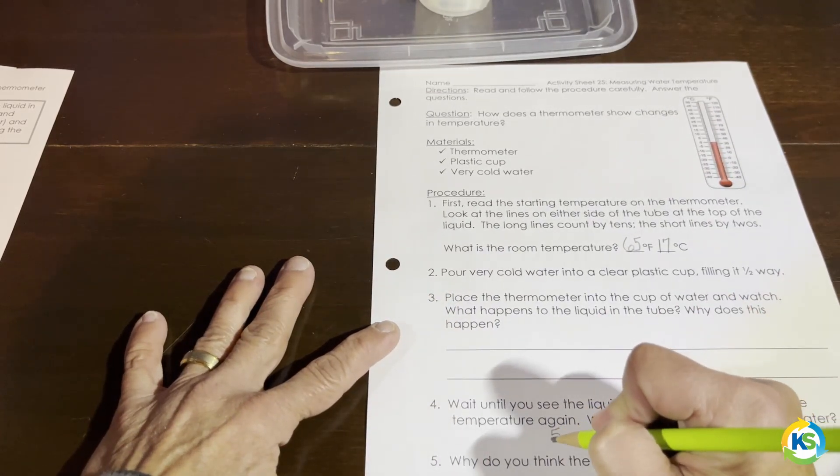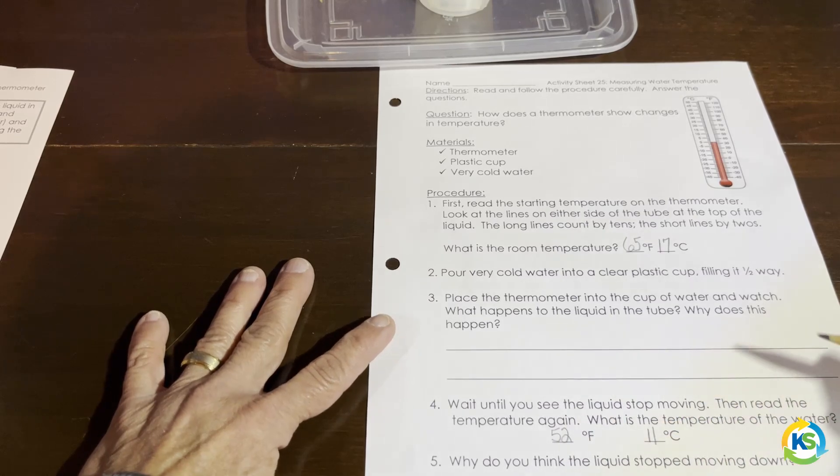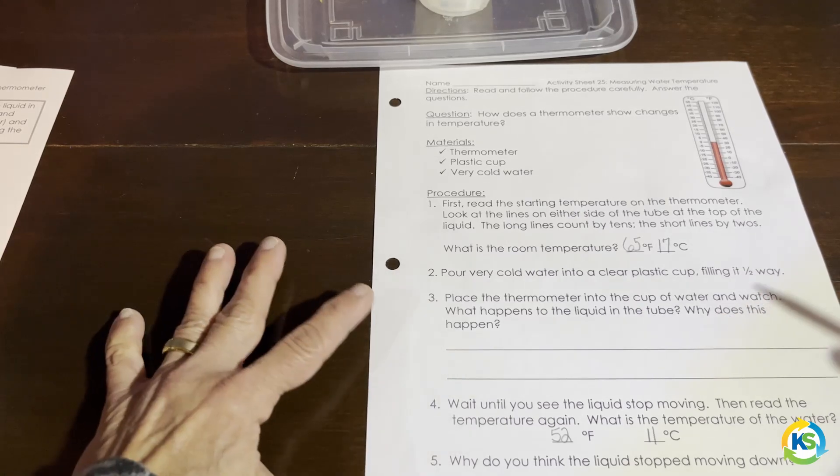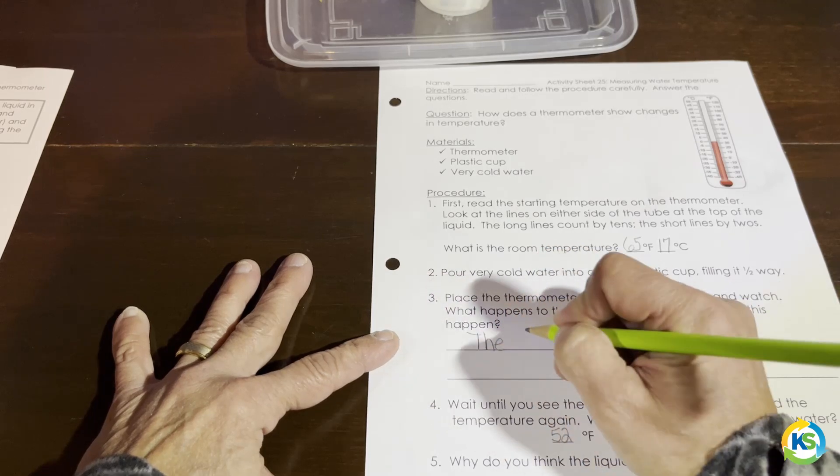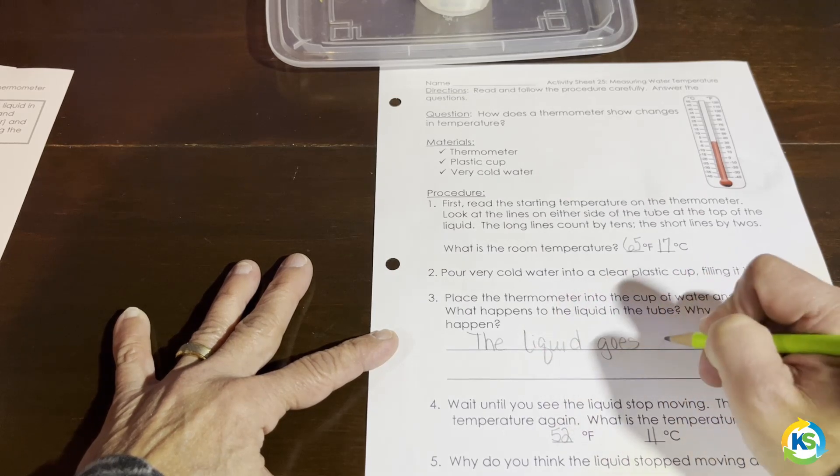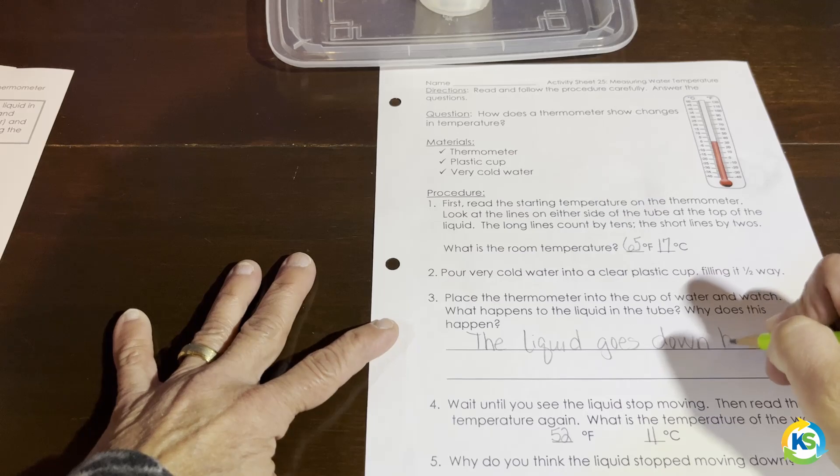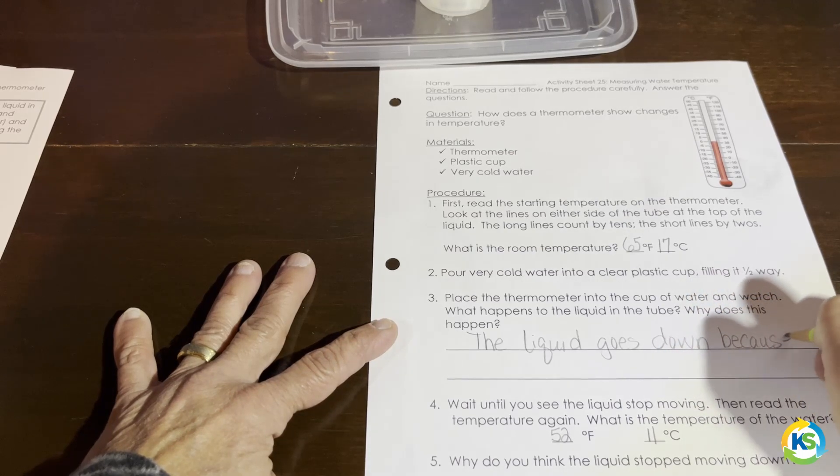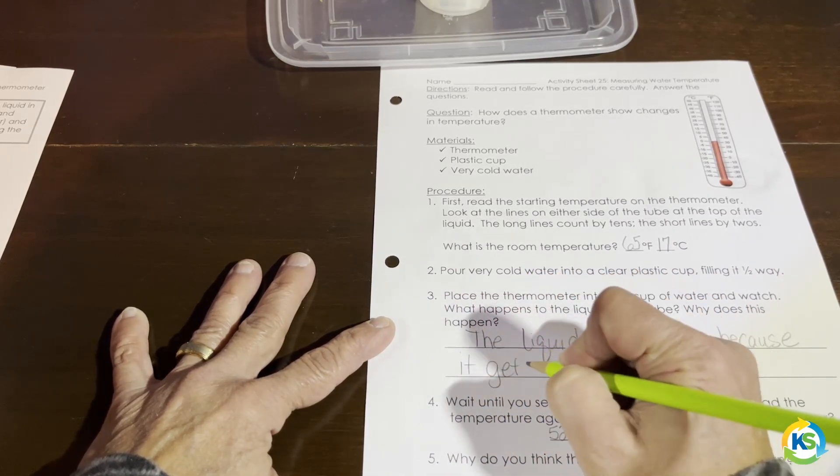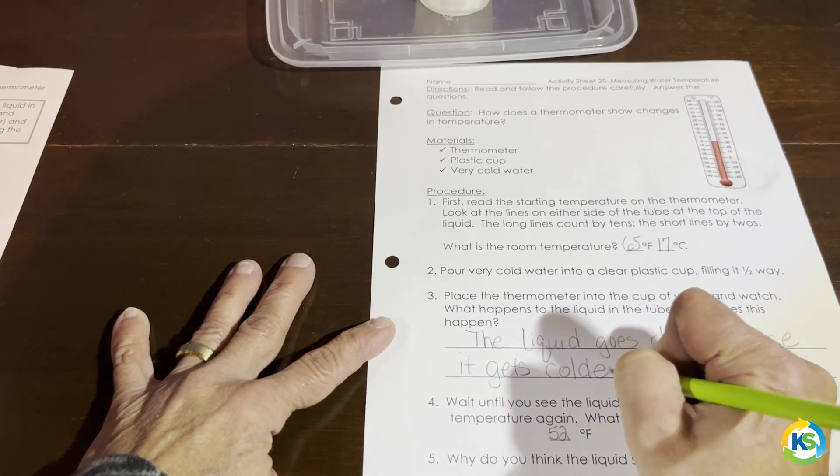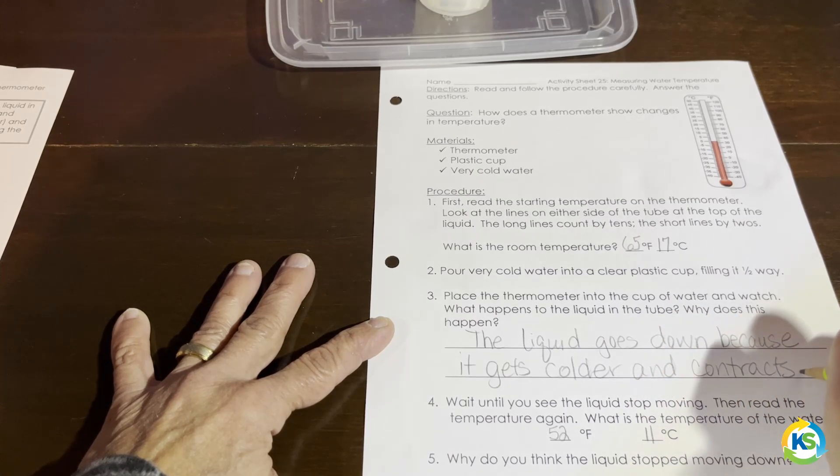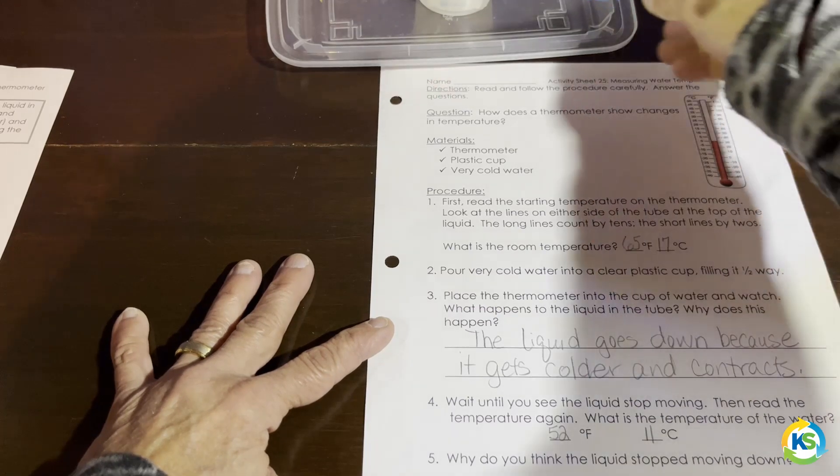So I'm going to record that down here. The question is, what happens and why does this happen? What happens is the liquid goes down because it gets colder and contracts or gets smaller. And they will understand that because of the previous lesson.